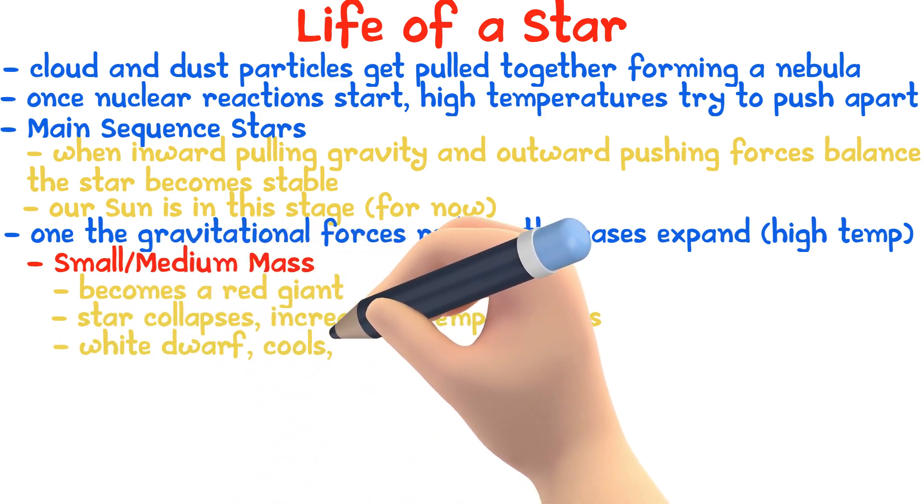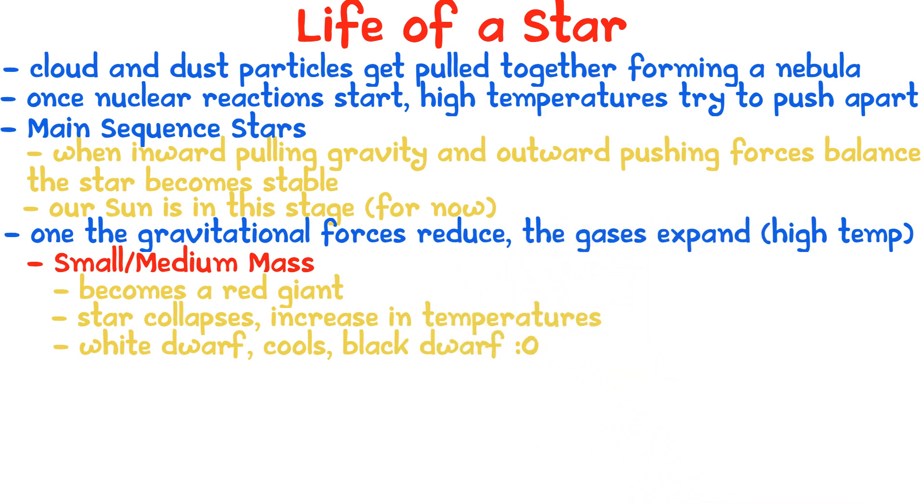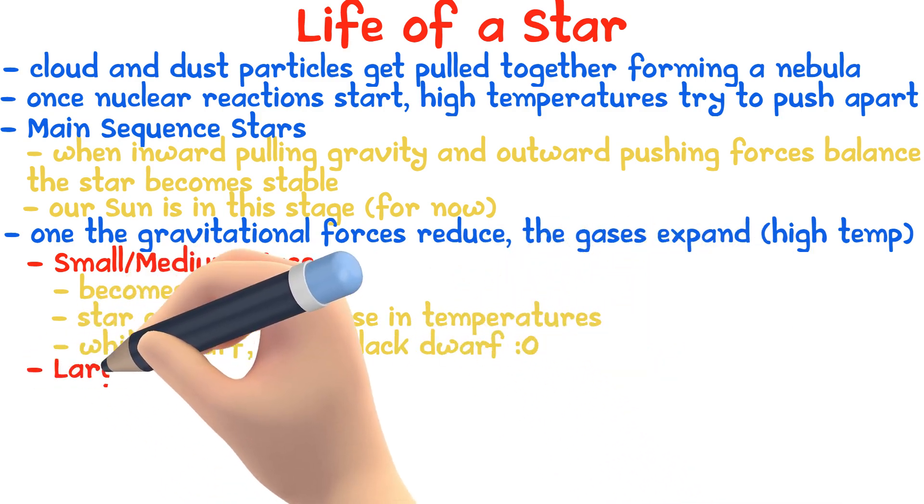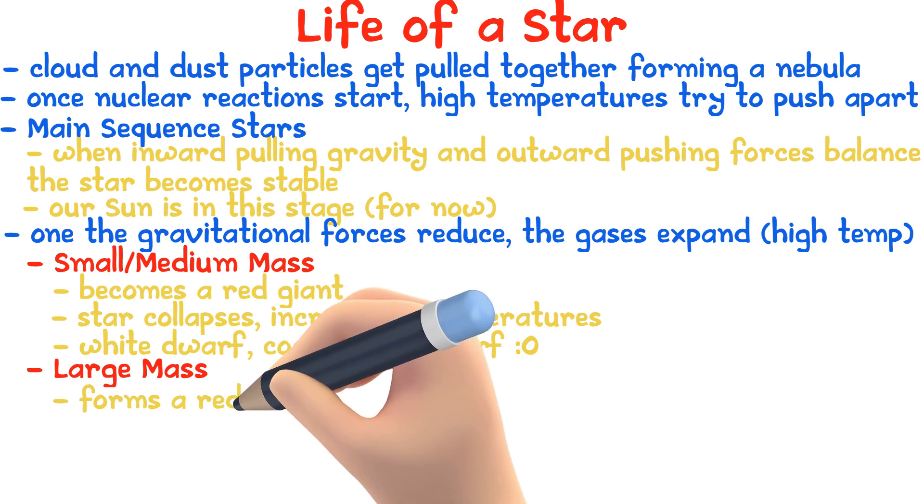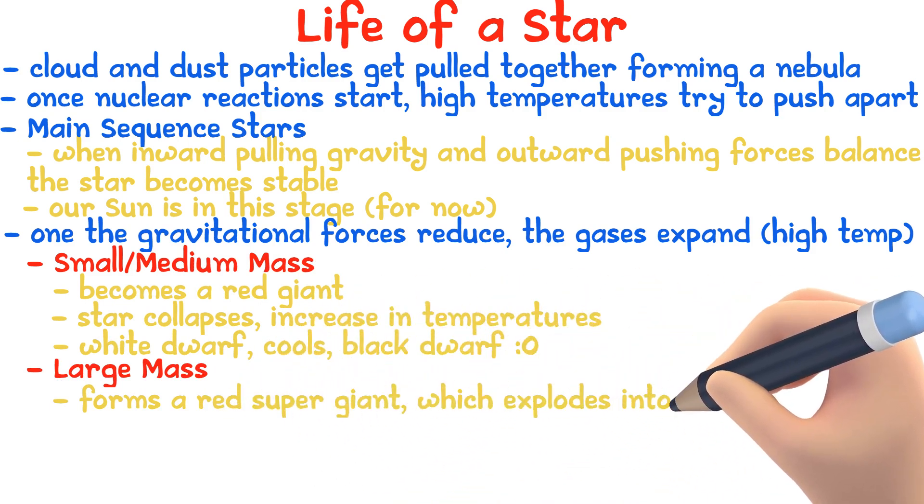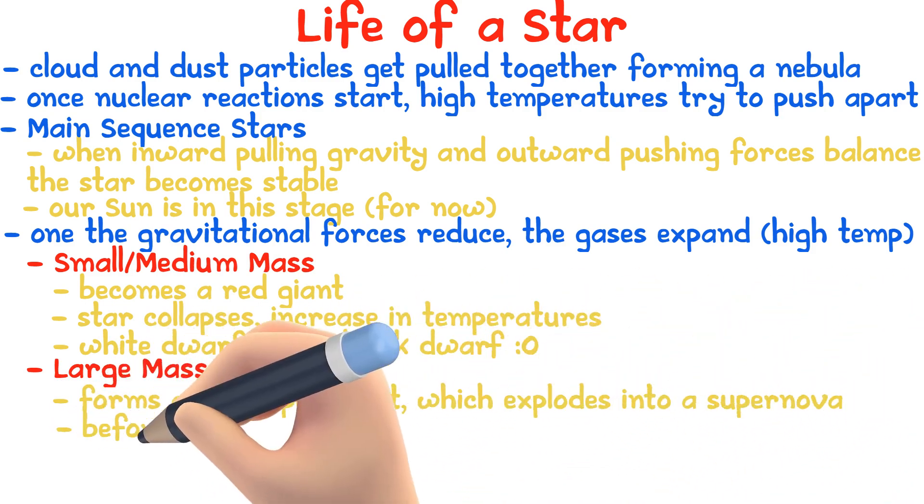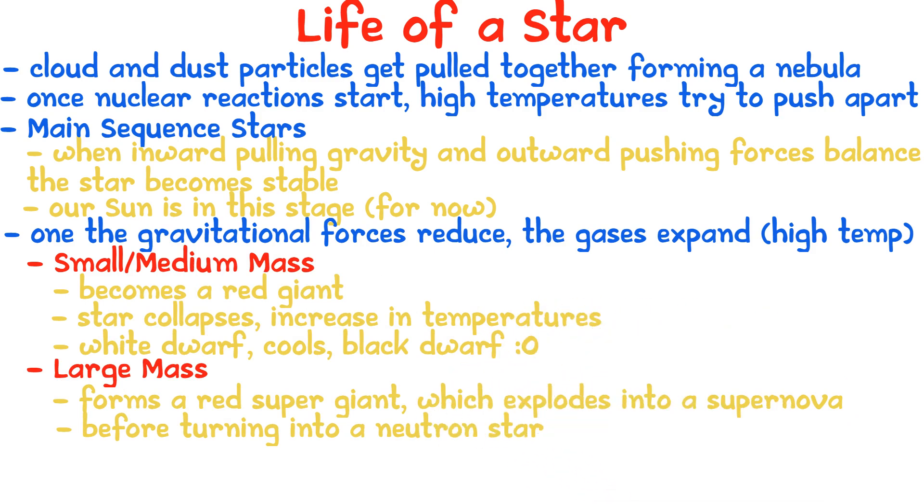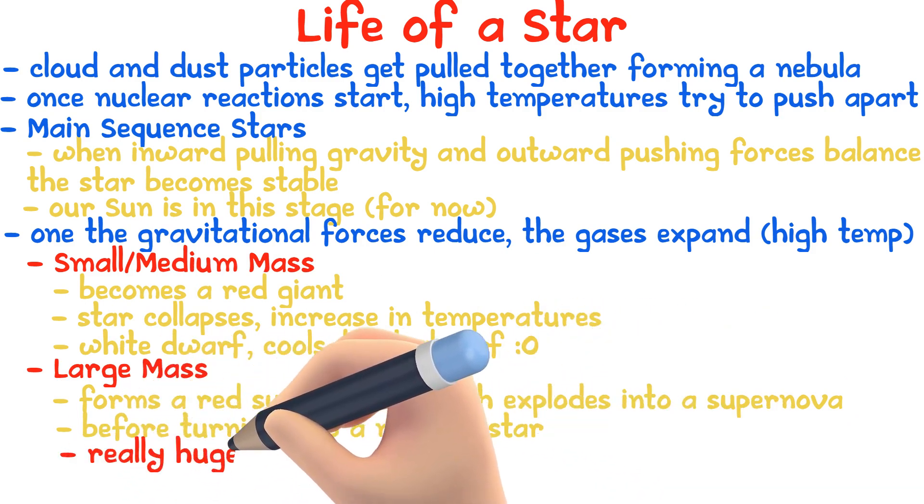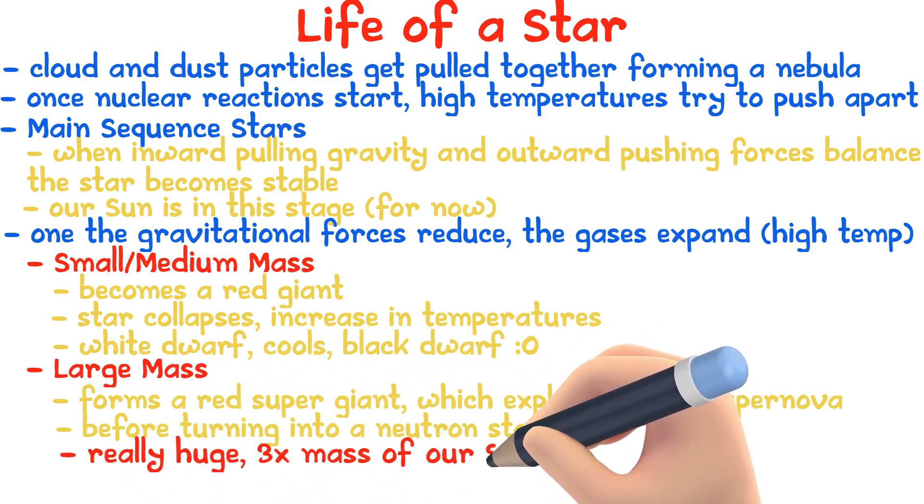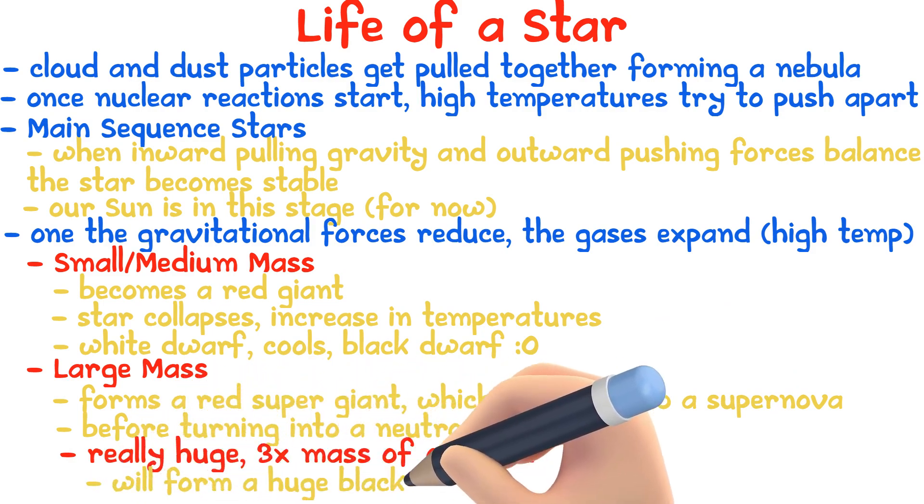Now, if the star has a large mass, it forms a red supergiant which explodes into a supernova before turning into a neutron star, or if it is really huge, that is more than three times the size of our Sun, it will form a huge black hole.